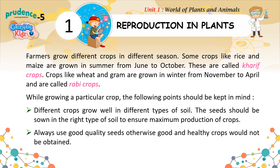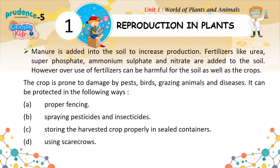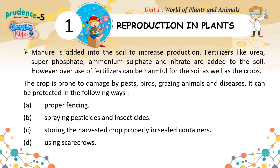Farmers grow different crops in different seasons. Some crops like rice are grown in summer from June to October — these are called kharif crops. Crops like wheat and gram are grown in winter from November to April and are called rabi crops. Different crops grow well in different types of soil, so seeds should be sown in the right soil for maximum production. Always use good quality seeds. Manure is added to the soil to increase production. Fertilizers like urea, superphosphate, ammonium sulfate, and nitrate are also added to the soil. However, overuse of fertilizers can be harmful for the soil as well as the crops.